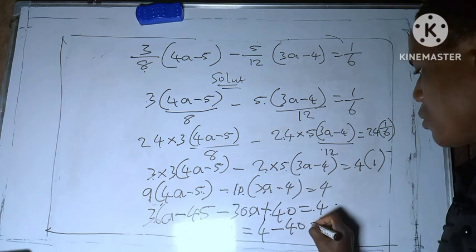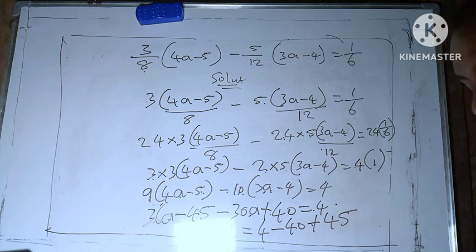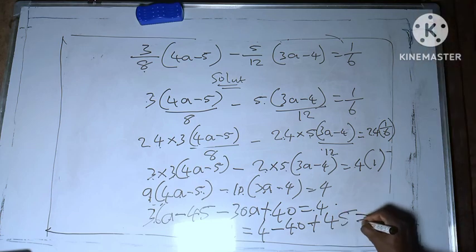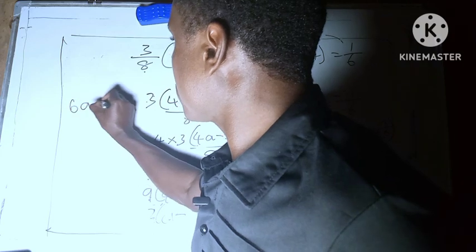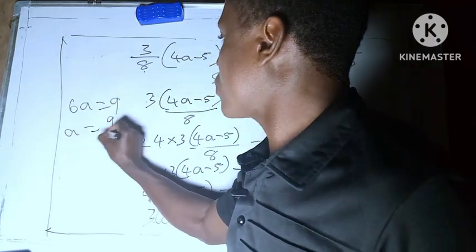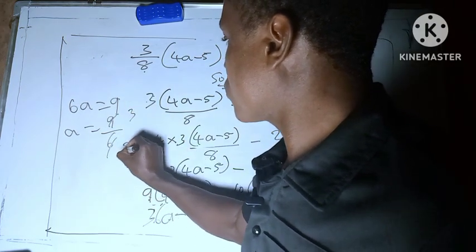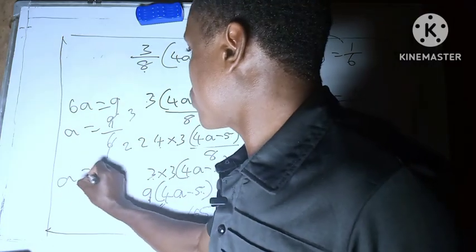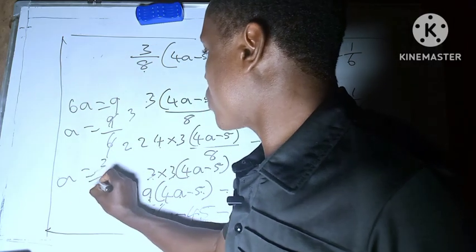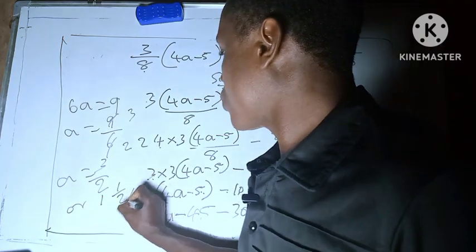When it moves to the right side it changes to positive 45. So 4 minus 40 plus 45 should remain only 9. So we are left with 6a equal to 9, so a equal to 9 over 6. You can cancel to get a equal to 3 over 2, or 1 and 1 over 2.